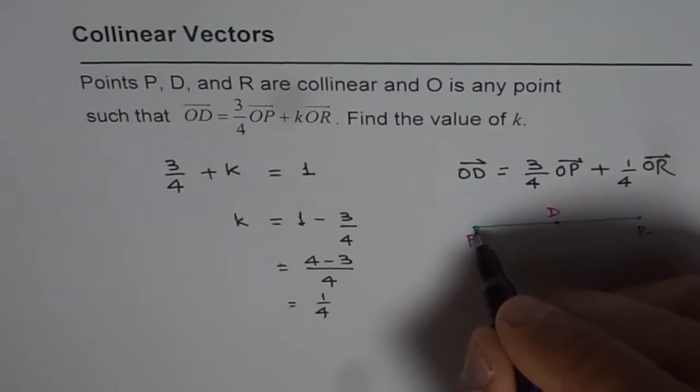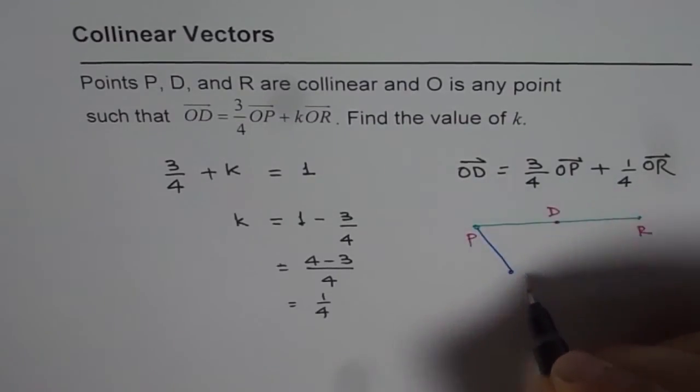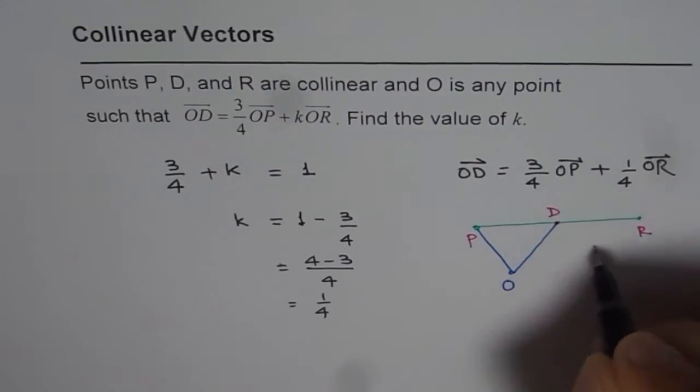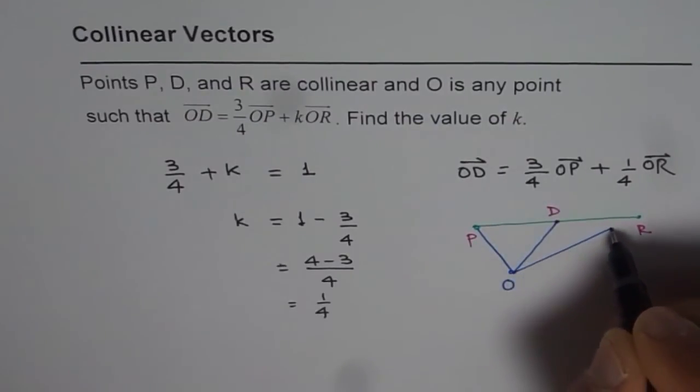We are taking an external point O. If O is the origin, then this becomes a position vector.